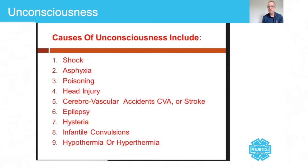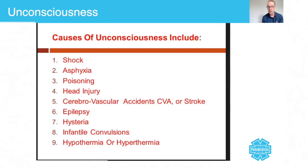Infantile convulsions are usually caused on most occasions by a state of hyperpyrexia, because children can't control their body temperature the same way that we do as adults — they don't have the shivering mechanism. And then hypothermia or hyperthermia — hypo is low, hyper is high — if your patient's body temperature is too low or too high, they can absolutely become unconscious.